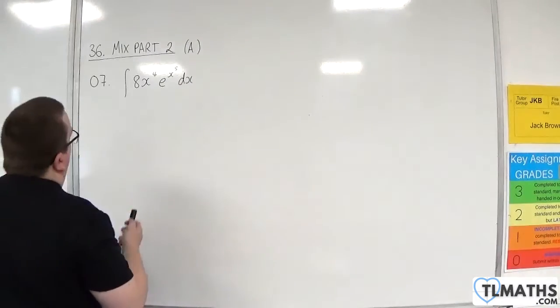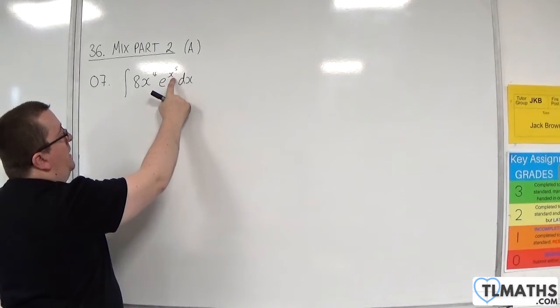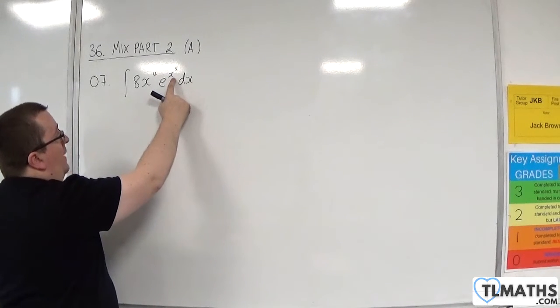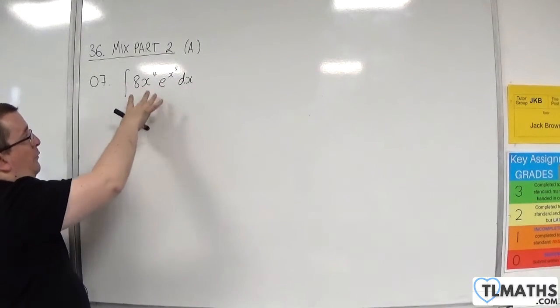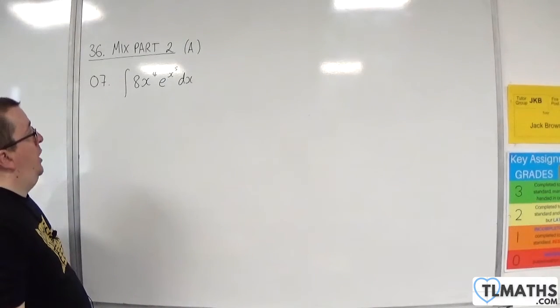OK, so this is one of those where you're looking for the interior function, which in this case is x to the 5, and that differentiates to 5x to the 4, and we've got a multiple of that on the outside. So we can do reversing the chain rule on this.